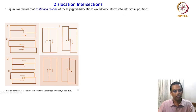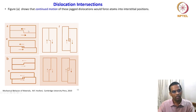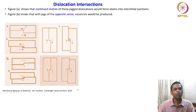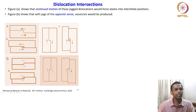This is the continuation of those jogs. This figure shows that a continued motion of this jog dislocation would force atoms into interstitial positions. Suppose a jog goes in one direction and another jog comes in the opposite direction — they will force interstitial atoms to get into the void. There is another possibility: it can also produce something different, as shown in figure (b), where jogs of opposite sign produce vacancies.